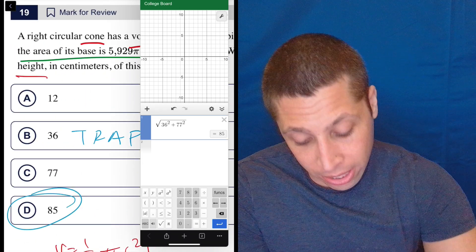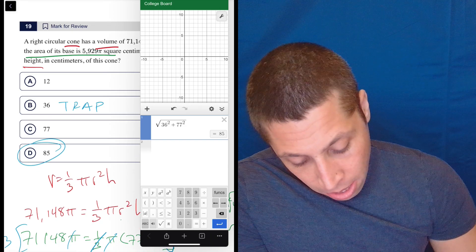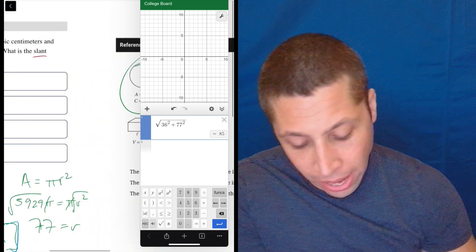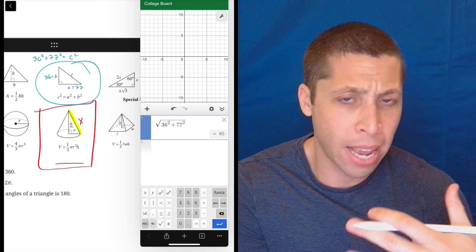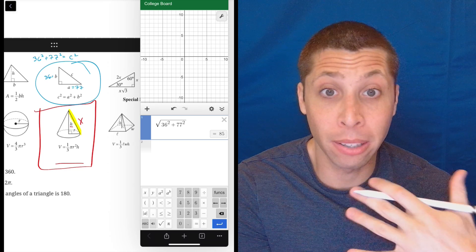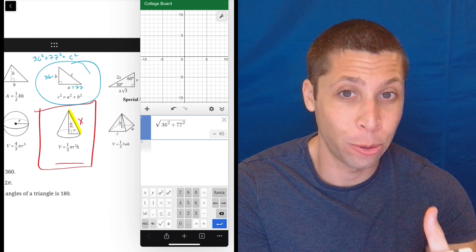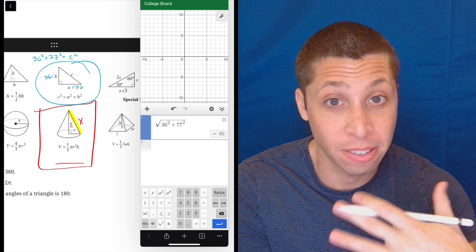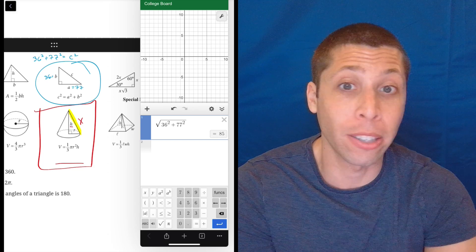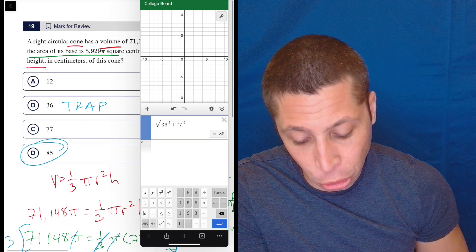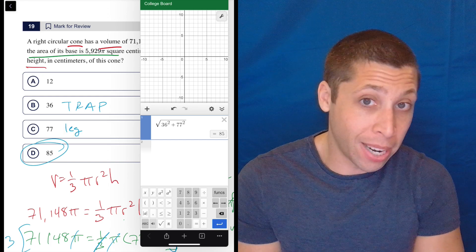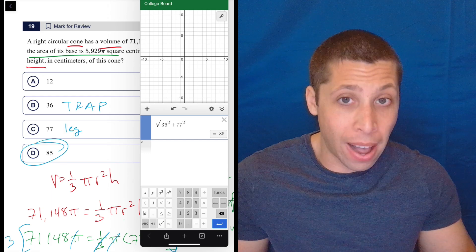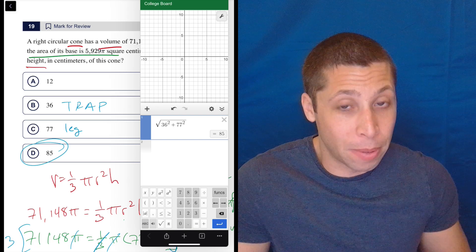And I kind of could have skipped that step because if you think about it, if I had a right triangle and I knew that 77 was one of the legs of that right triangle, I know by the laws of right triangles that the hypotenuse has to be bigger than either of the legs. The longest side of a right triangle is always the hypotenuse. And just based on the fact that there's multiple choice, the only thing longer than that leg, that radius, is 85. So process of elimination, it has to be that.